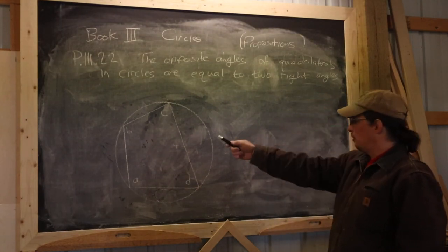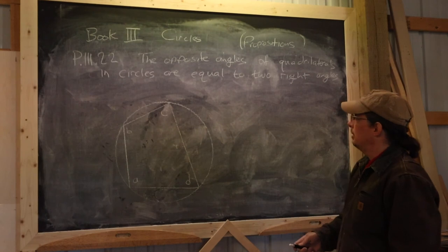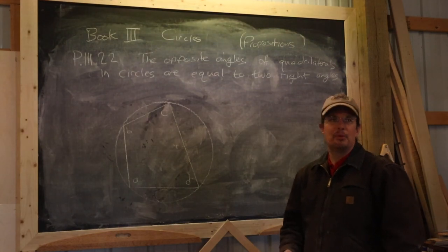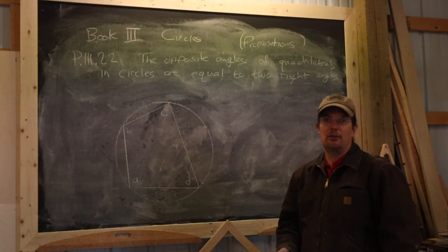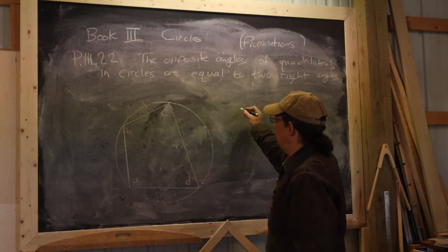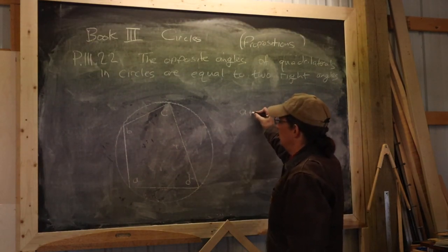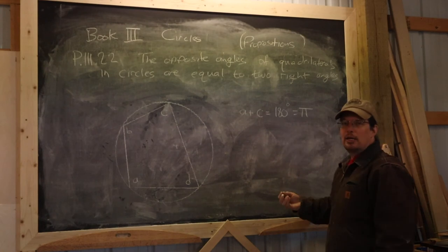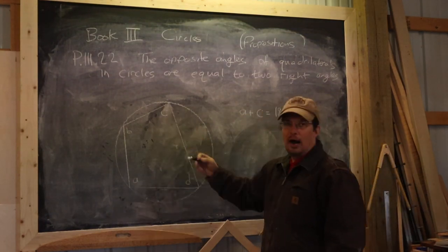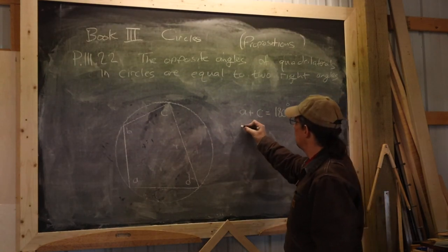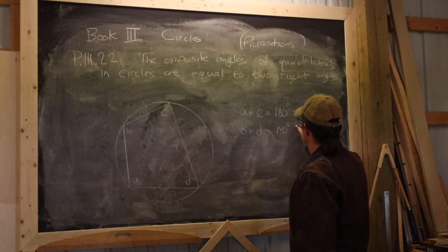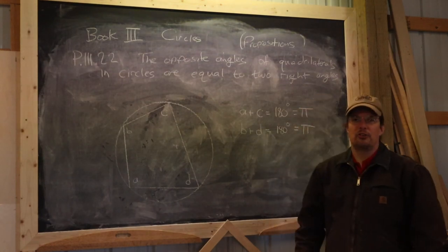Proposition 22 states that if you have a quadrilateral inscribed in a circle, the opposite angles sum to two right angles — 180 degrees. So angle A plus angle C equals 180 degrees, and the same is true for angles B and D. In other words, opposite angles of a cyclic quadrilateral are supplementary.